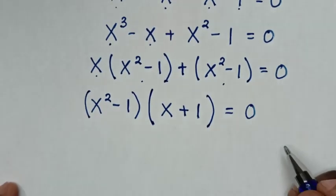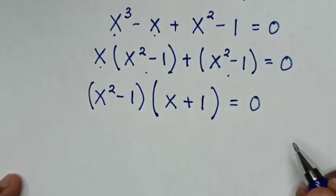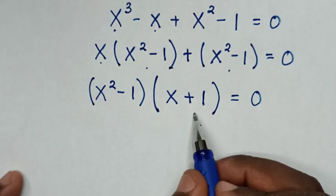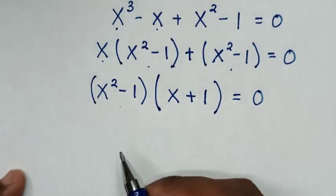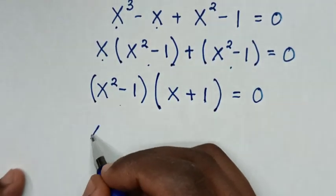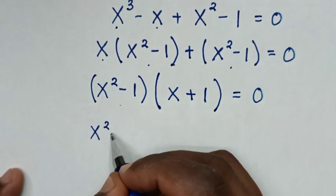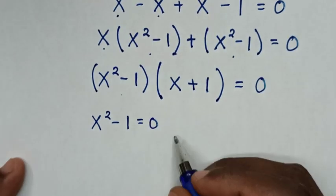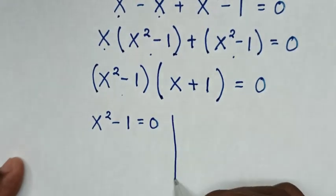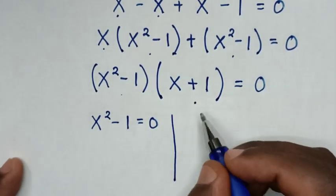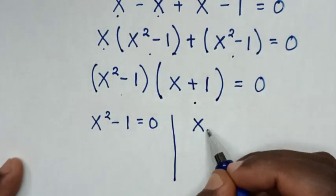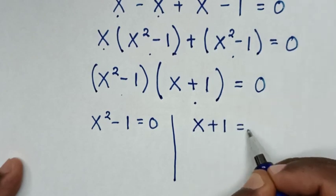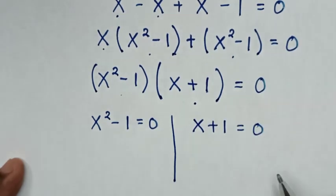From this equation we have two solutions: the first solution is x² - 1 = 0, and the second solution is x + 1 = 0.